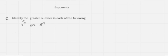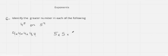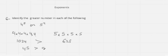Now here we have another question: identify the greater number in each case. I have 4 power 5 and 5 power 4. 4 power 5 means multiplying 4 five times, and 5 power 4 means multiplying 5 four times. If I multiply 4 five times I will get 1024, and if I multiply 5 four times I will get 625. So 4 power 5 is greater than 5 power 4.